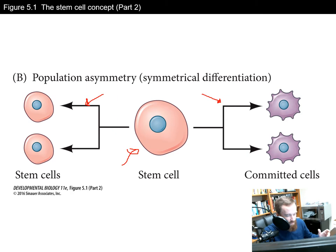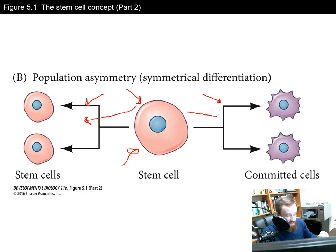When we think of this from a population standpoint, if this cell were to divide and become more stem cells, we've increased the population of stem cells in that area by one. If it were to divide and both daughter cells become committed cells, then we've decreased the population of those stem cells by one. That's why it's called population asymmetry — it's not the same between the beginning and end results.